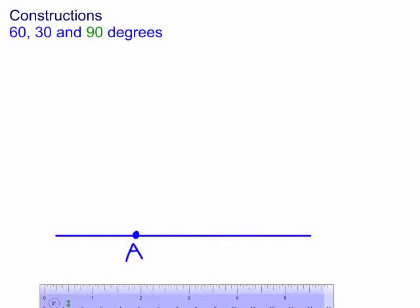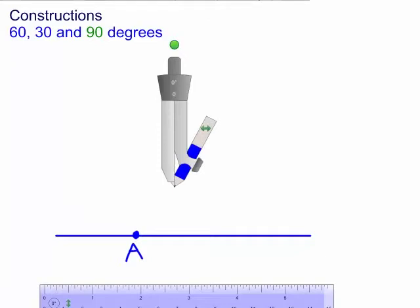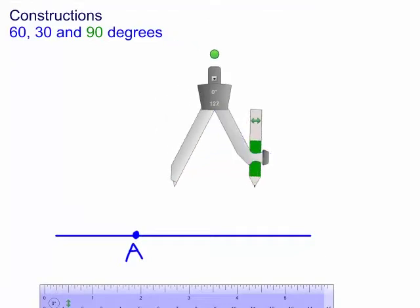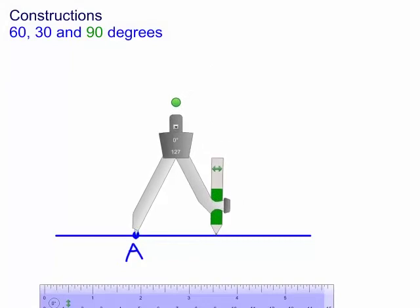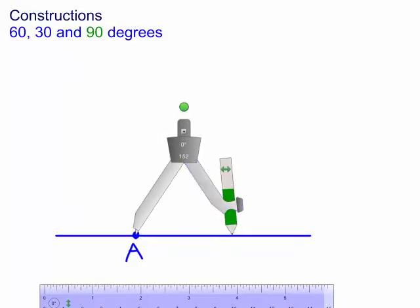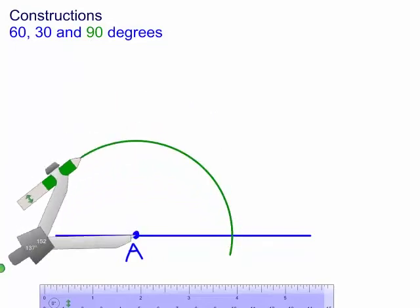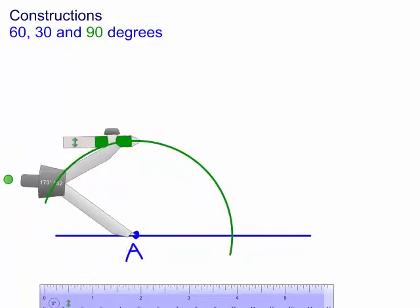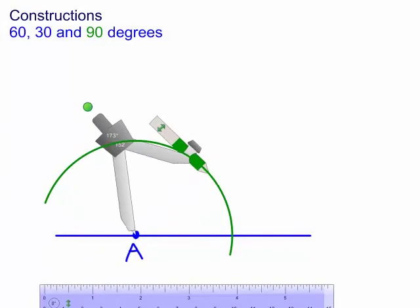We need to get our compass. We open the compass at any radius, move it across to compass point A, and draw a fairly big arc. We need a fairly big arc because I need to step two steps across. Let's mark this point here B.